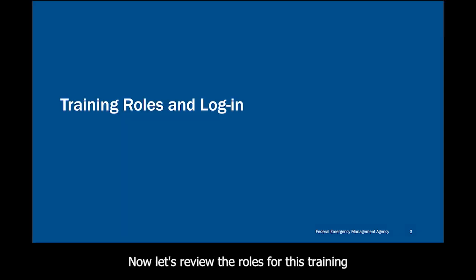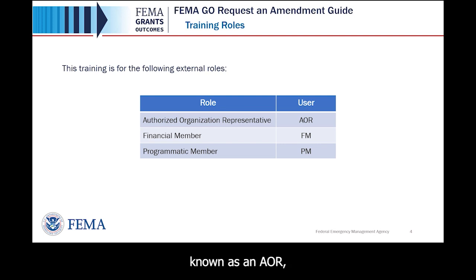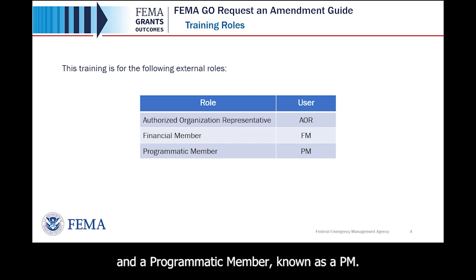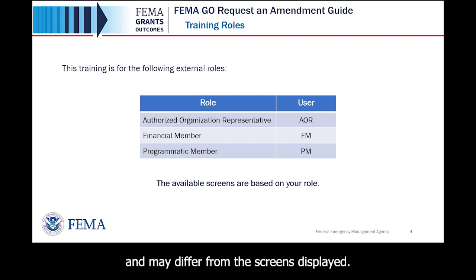Now let's review the roles for this training and how to log in as an external user. This training is for the following external roles: an Authorized Organization Representative known as an AOR, a Financial Member known as a FM, and a Programmatic Member known as a PM. Please remember the available screens you see are based on your role and may differ from the screens displayed.